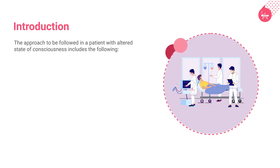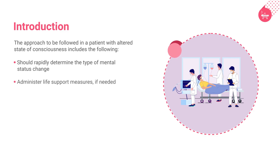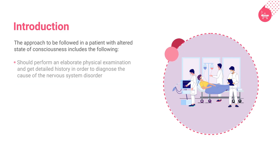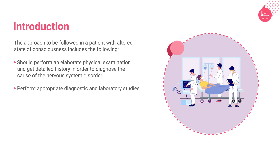Step 1: Rapidly determine the type of mental status change. Step 2: Administer life support measures if needed. Step 3: Perform an elaborate physical examination and get a detailed history in order to diagnose the cause of the nervous system disorder and initiate treatment. Step 4: Perform appropriate diagnostic and laboratory studies.